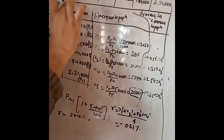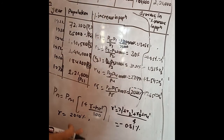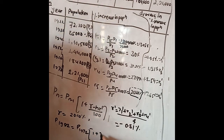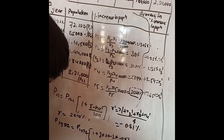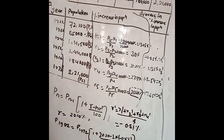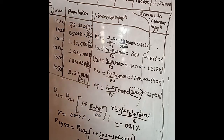First, we need to determine the population in 1982. Population in 1982 equals population in 1972 multiplied by (1 + (20.10 − 1 × (−0.51))) divided by 100, where n equals 1 decade. On solving this, we get the population in 1982 as 266,549 people.